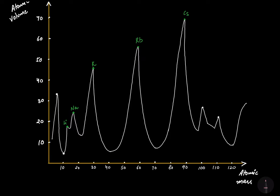Magnesium is present at the midpoint of the first descending curve, calcium at the midpoint of the next descending curve, and barium at the midpoint of a further descending portion. So the alkaline earth metals are located at the midpoints of the descending portions of the curve.